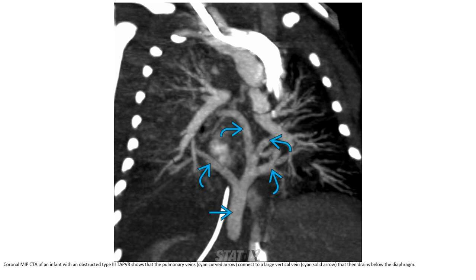This is the CTA of a patient with infradiaphragmatic Type 3 total anomalous pulmonary venous return. You can see that the pulmonary vein connects to a large vertical vein, which then drains below the diaphragm.